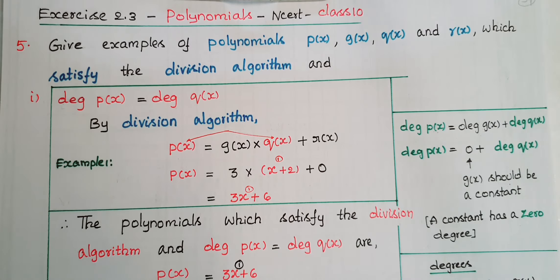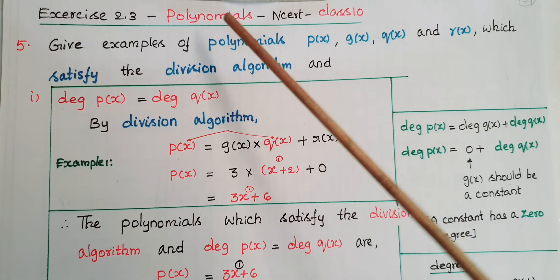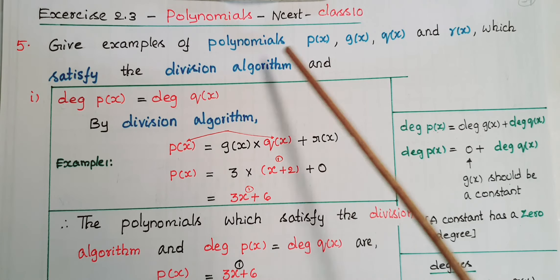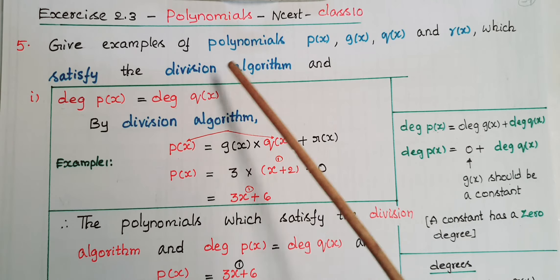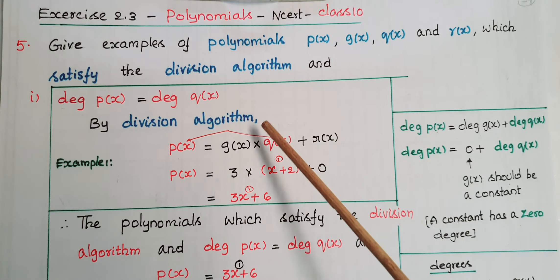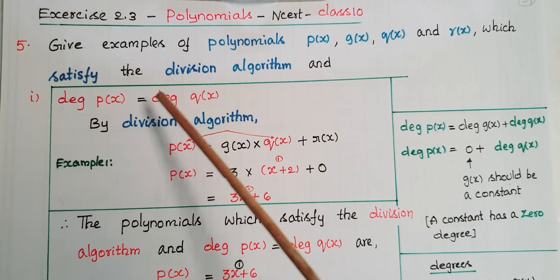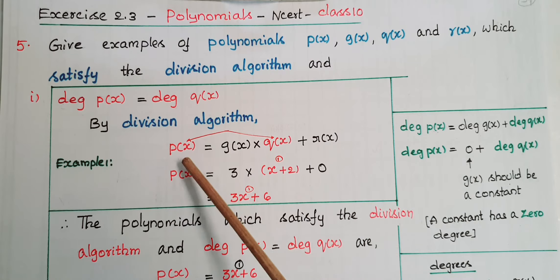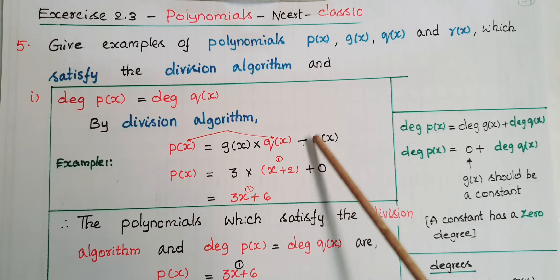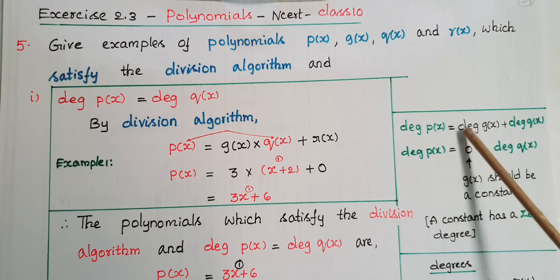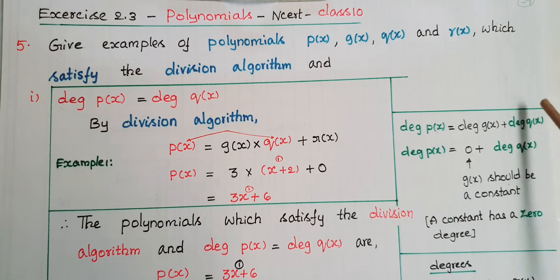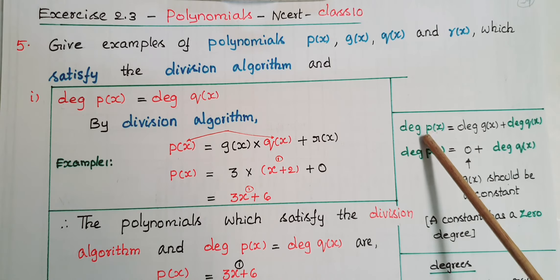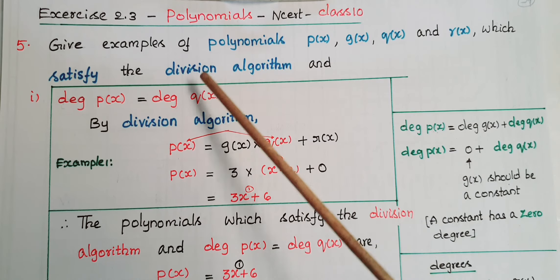Now I am going to tell the solution of the fifth problem from Exercise 2.3: Give examples of polynomials p(x), g(x), q(x), and r(x) which satisfy the division algorithm and (a) degree of p(x) equals degree of q(x). So we have to assume polynomials satisfying p(x) = g(x)·q(x) + r(x) and also the degree of p(x) equals degree of q(x).